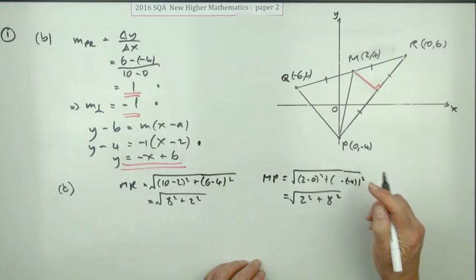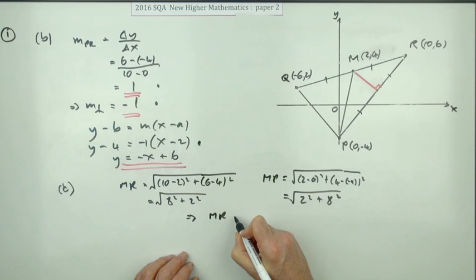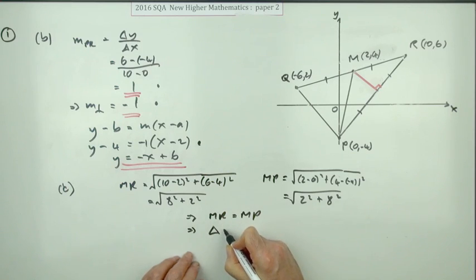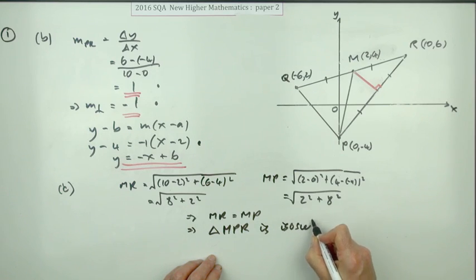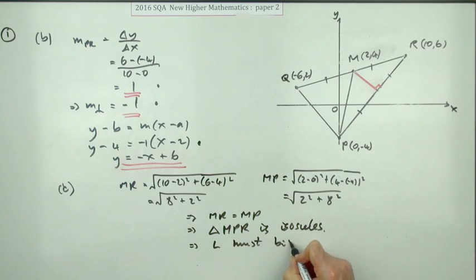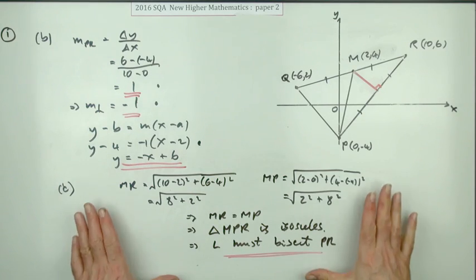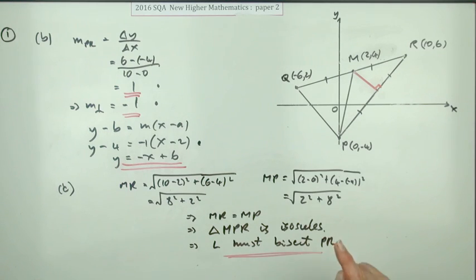I might have put a 4 there, and even without working that out they're obviously the same. You can see MR equals MP which means triangle MPR is isosceles, maybe more than that. From the information I've got here it could be one step further, it could be equilateral, but it doesn't matter, it's at least isosceles, which means that that line must bisect, which means L must bisect PR. However that's a lot longer than just finding the coordinates of the midpoint and checking it fits the line, so the very first method was certainly the quickest.